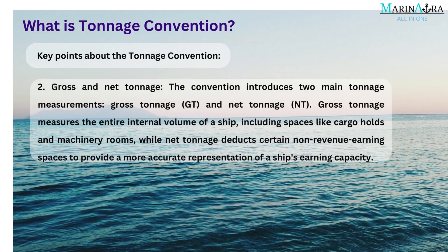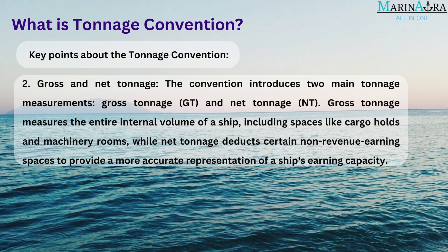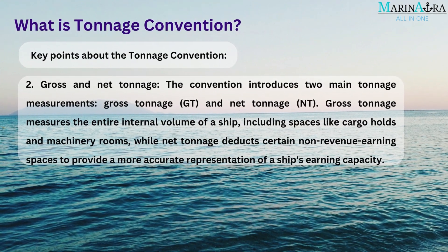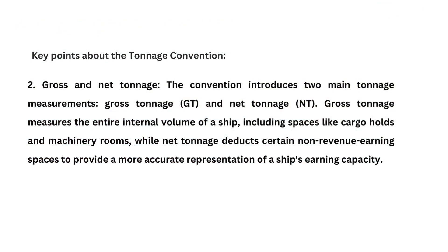Gross and Net Tonnage: the convention introduces two main tonnage measurements — gross tonnage (GT) and net tonnage (NT). Gross tonnage measures the entire internal volume of a ship, including spaces like cargo holds and machinery rooms, while net tonnage deducts certain non-revenue earning spaces to provide a more accurate representation of a ship's earning capacity.